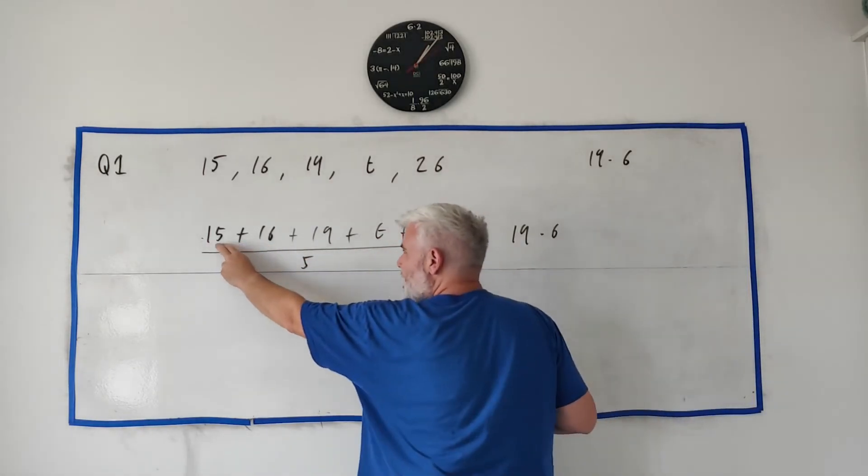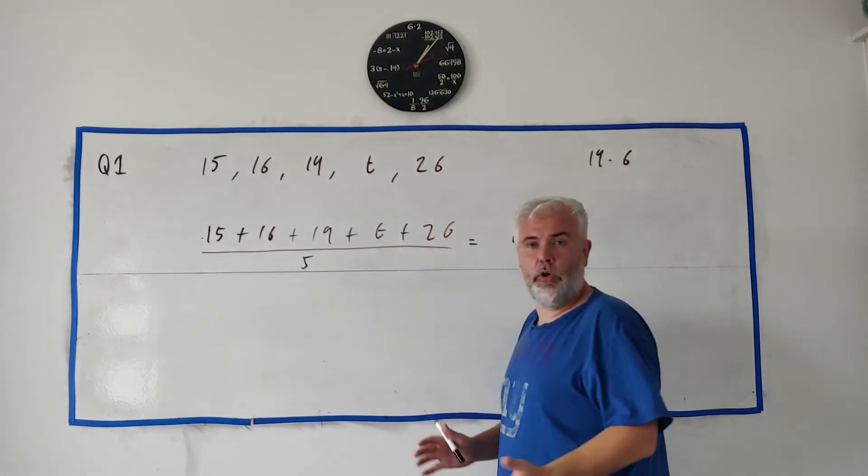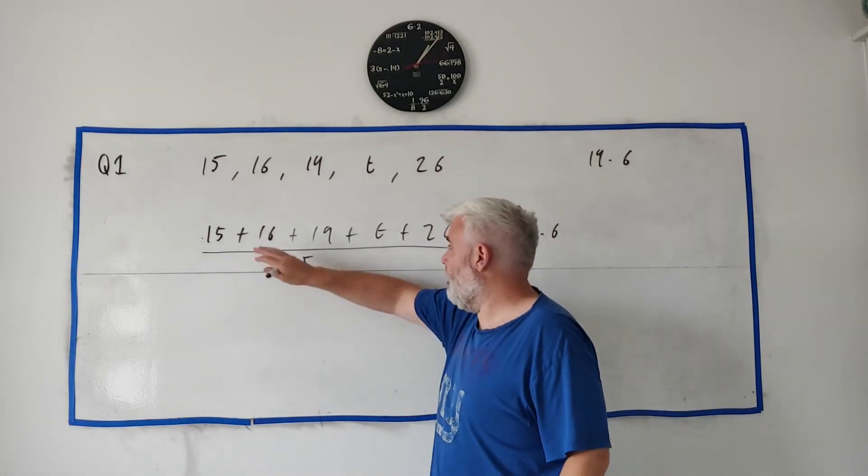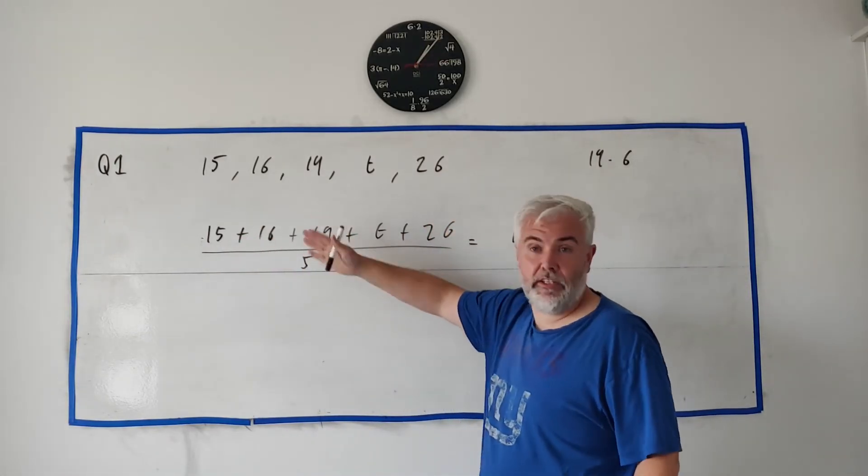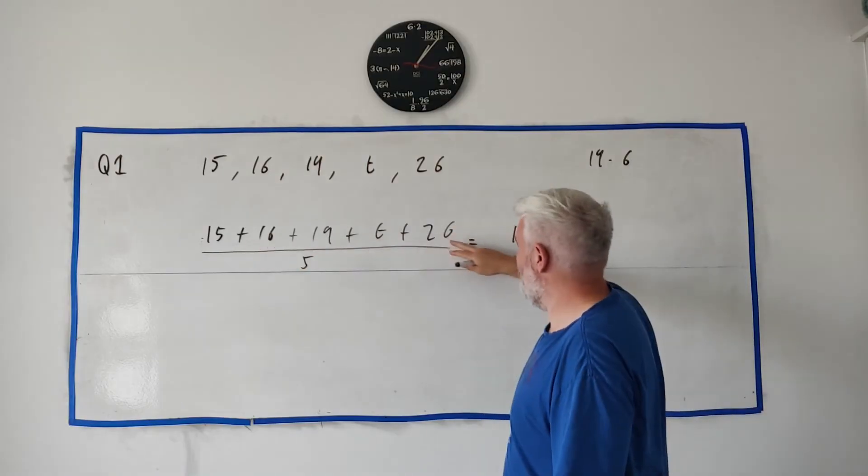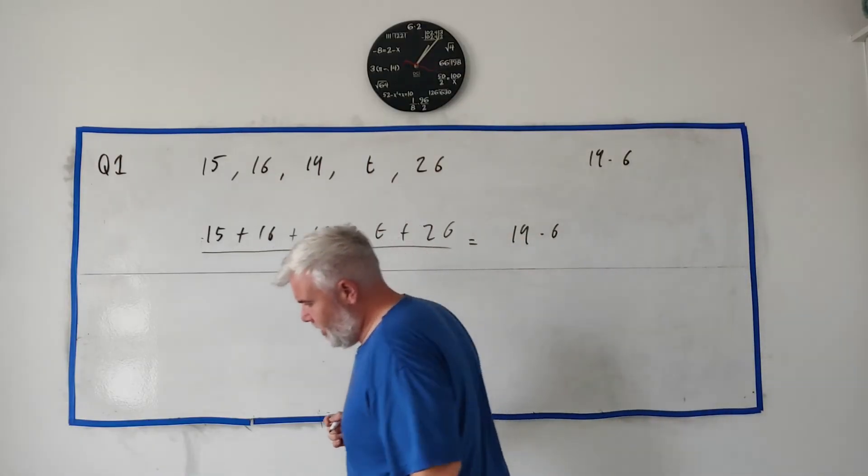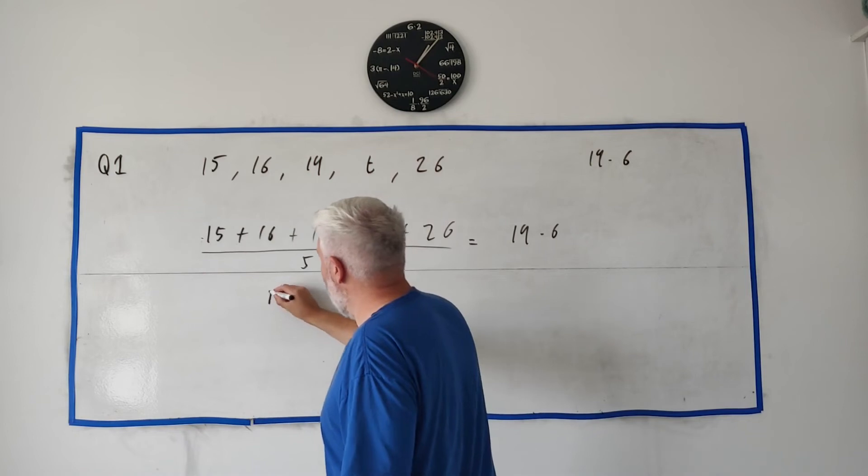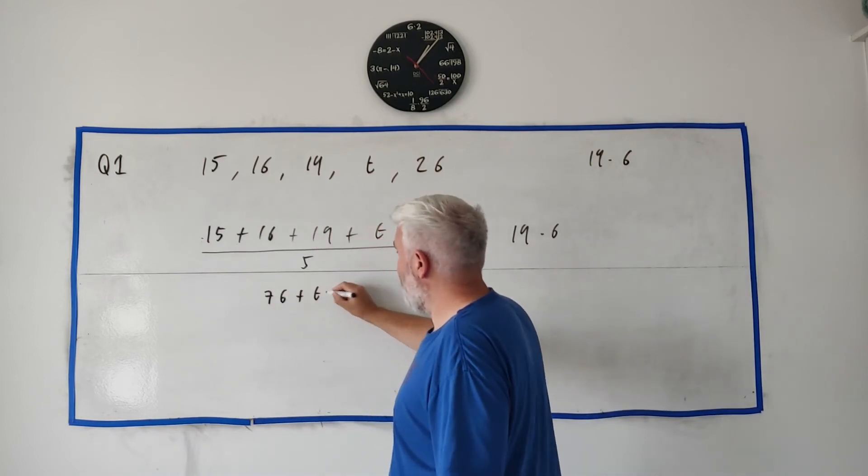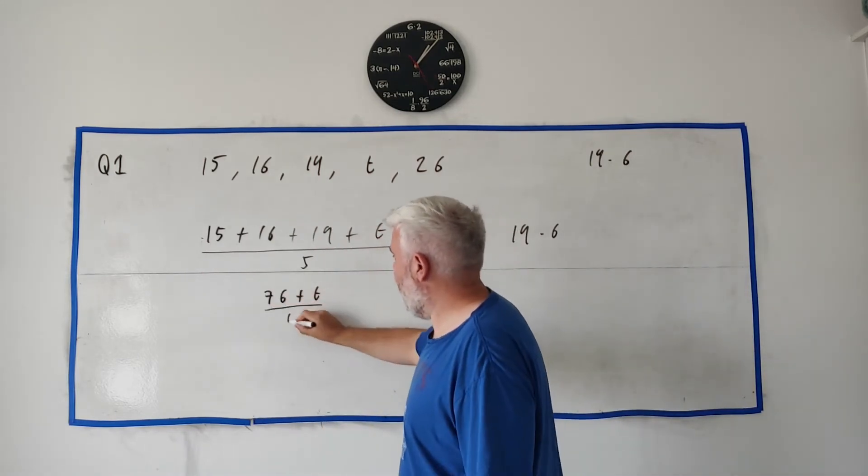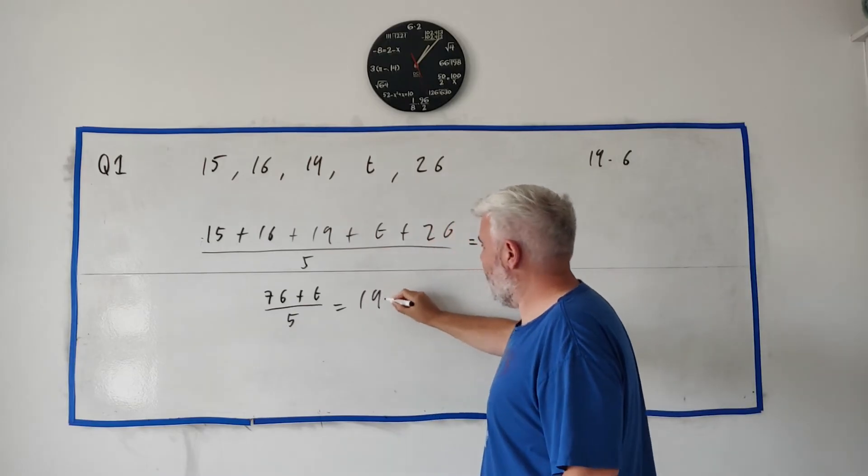We can clean up. There's lots of just adding here. 15 plus 16, we could write 31, plus another 19, that'd be 50, and so on. So let's just add all these numbers together. I believe it's 76. Yeah. Adds all of them up. They get 76 plus T divided by five. And that still equals 19.6.